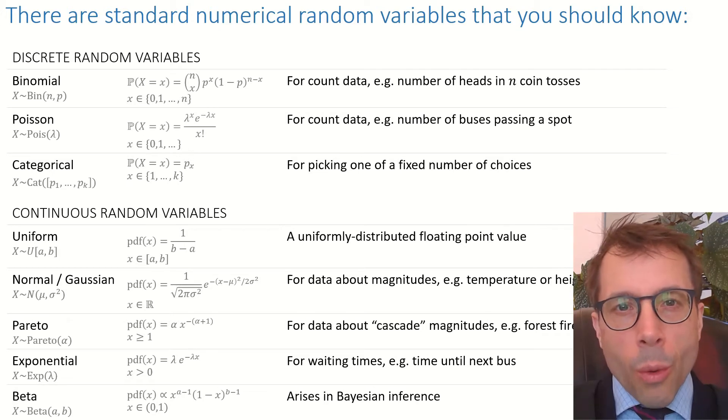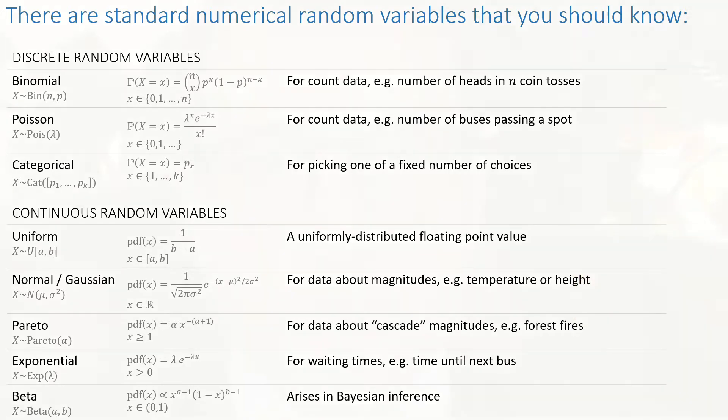More importantly, you'll have seen what are the types of data for which you should use each of them. If you need to check out the details of any of these random variables, Wikipedia is perfectly fine, but watch out—for some of them, Wikipedia uses one way to parameterize them and NumPy uses another.